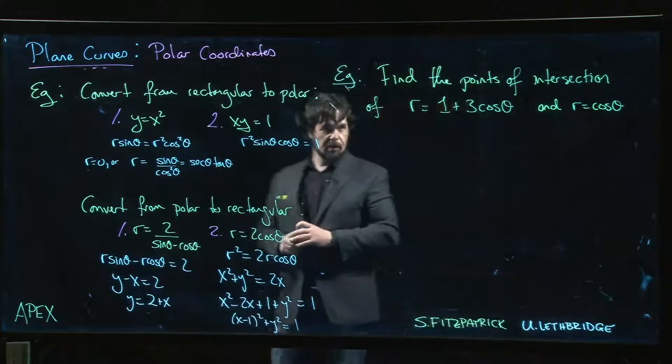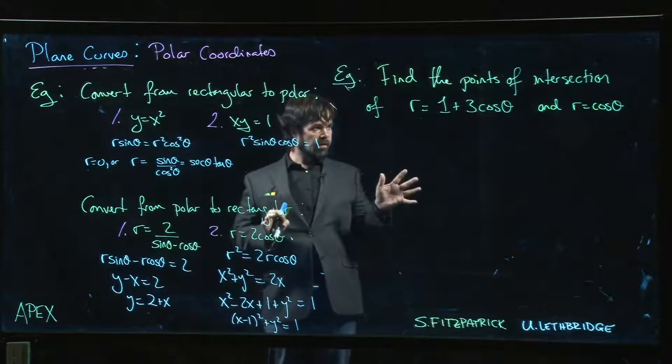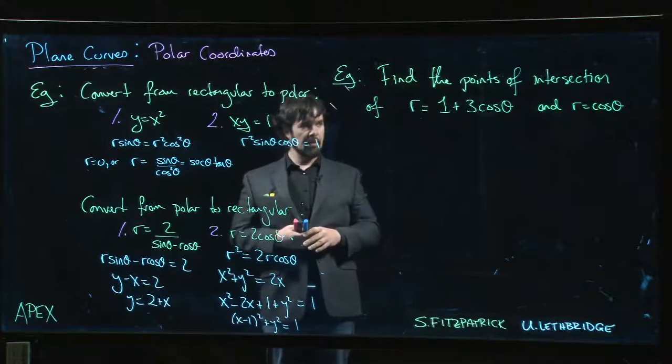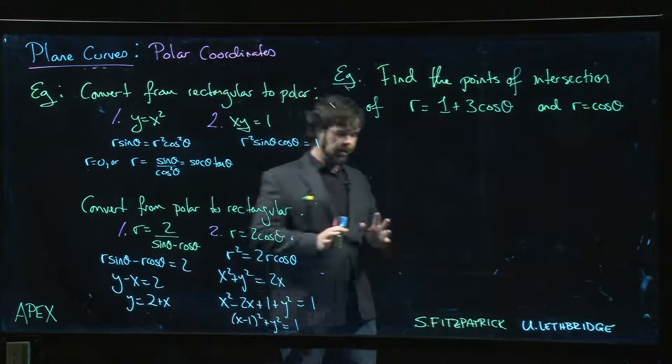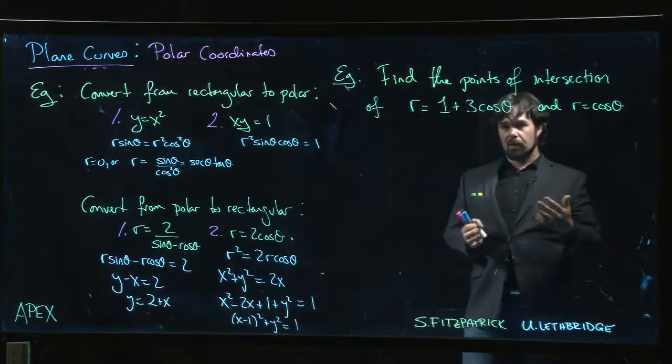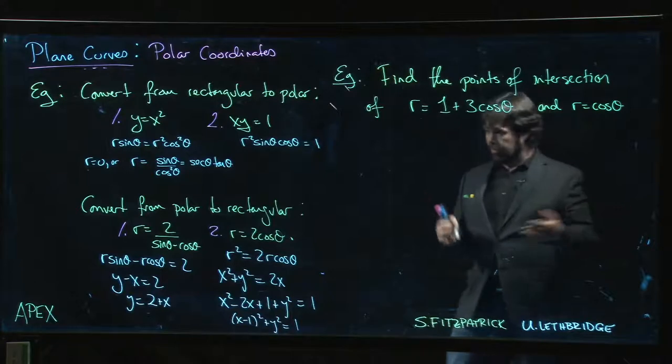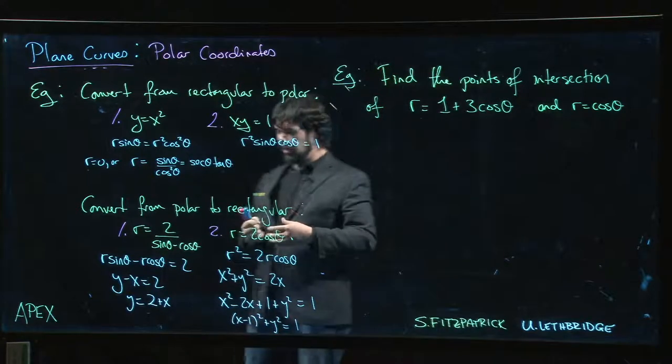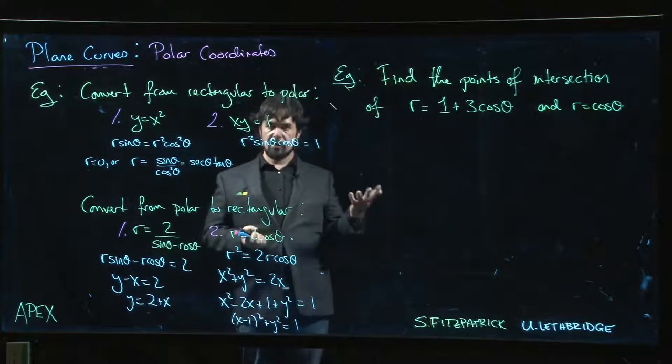This will be our last example for this section. We're going to find points of intersection for two curves. This is important because in the next section we'll look at doing calculus with polar curves, computing area for example, and if you're calculating area between polar curves you need to know where they intersect.